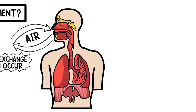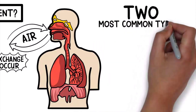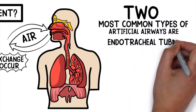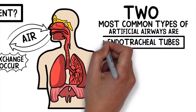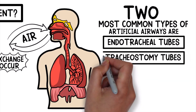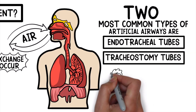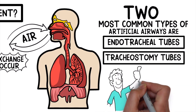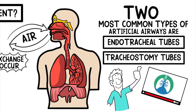The two most common types of artificial airways are: one, endotracheal tubes, and two, tracheostomy tubes. Each type has different uses and advantages, and we talk a lot about them here on this channel.